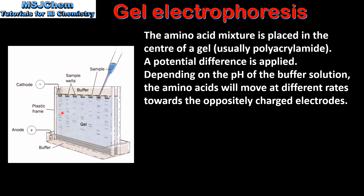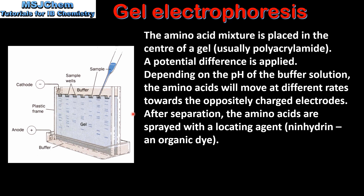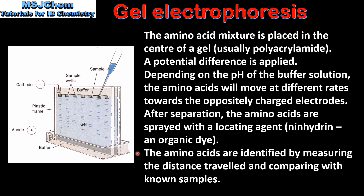Amino acids that have a positive charge in the buffer solution are attracted to the cathode. Amino acids that have a negative charge in the buffer solution are attracted to the anode. After separation, the amino acids are sprayed with a locating agent which is ninhydrin, an organic dye. Finally, the amino acids are identified by measuring the distance travelled and comparing with known samples.